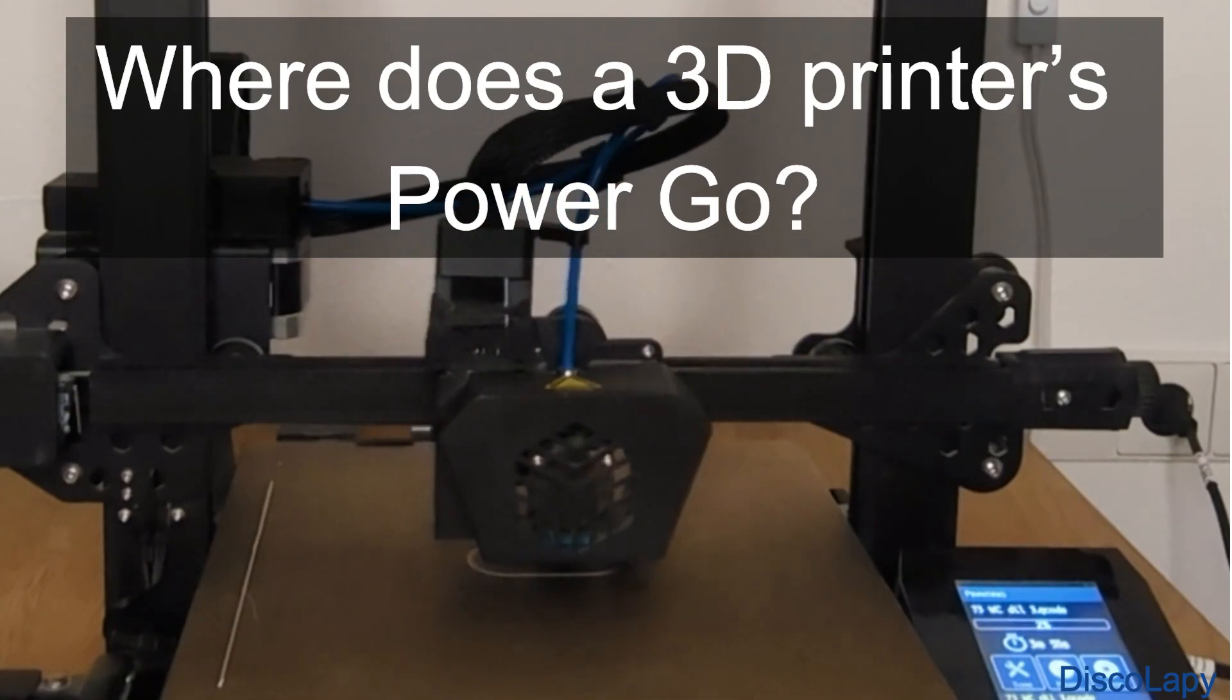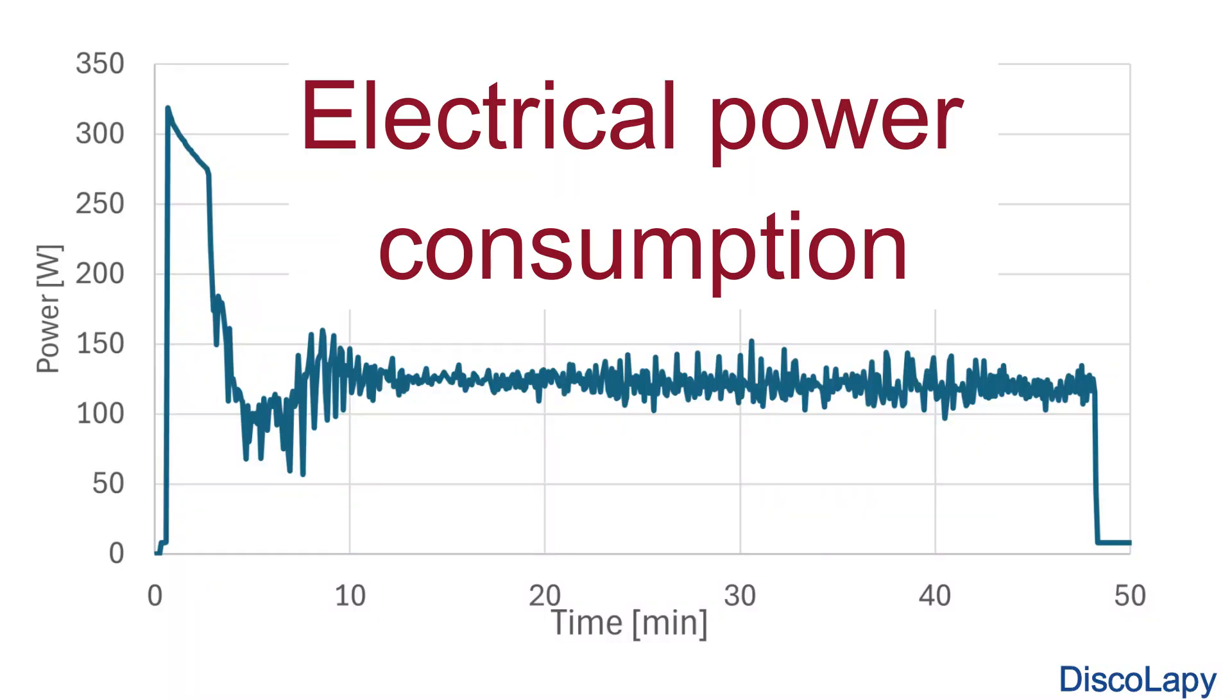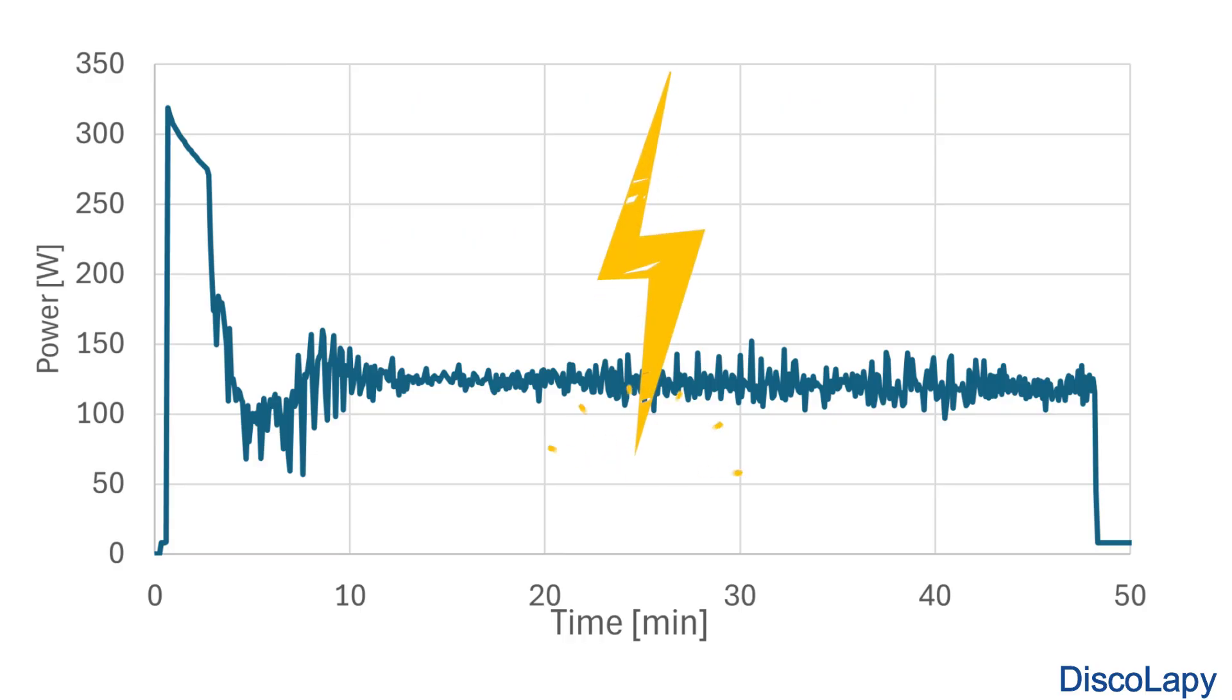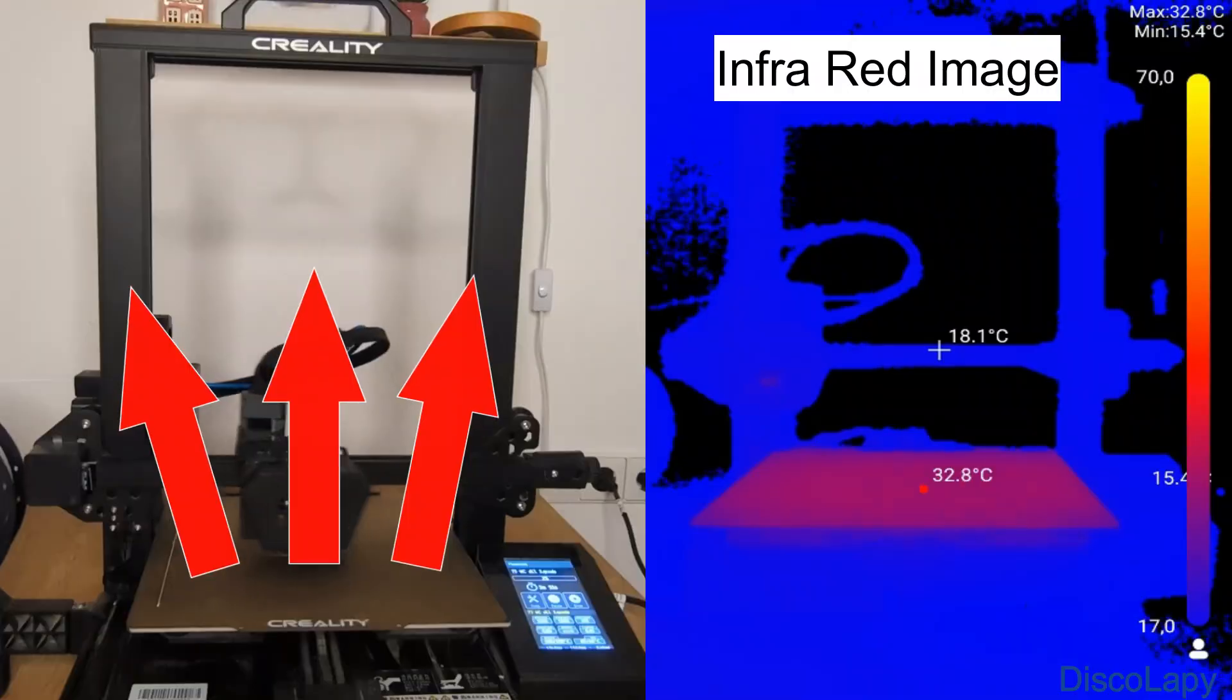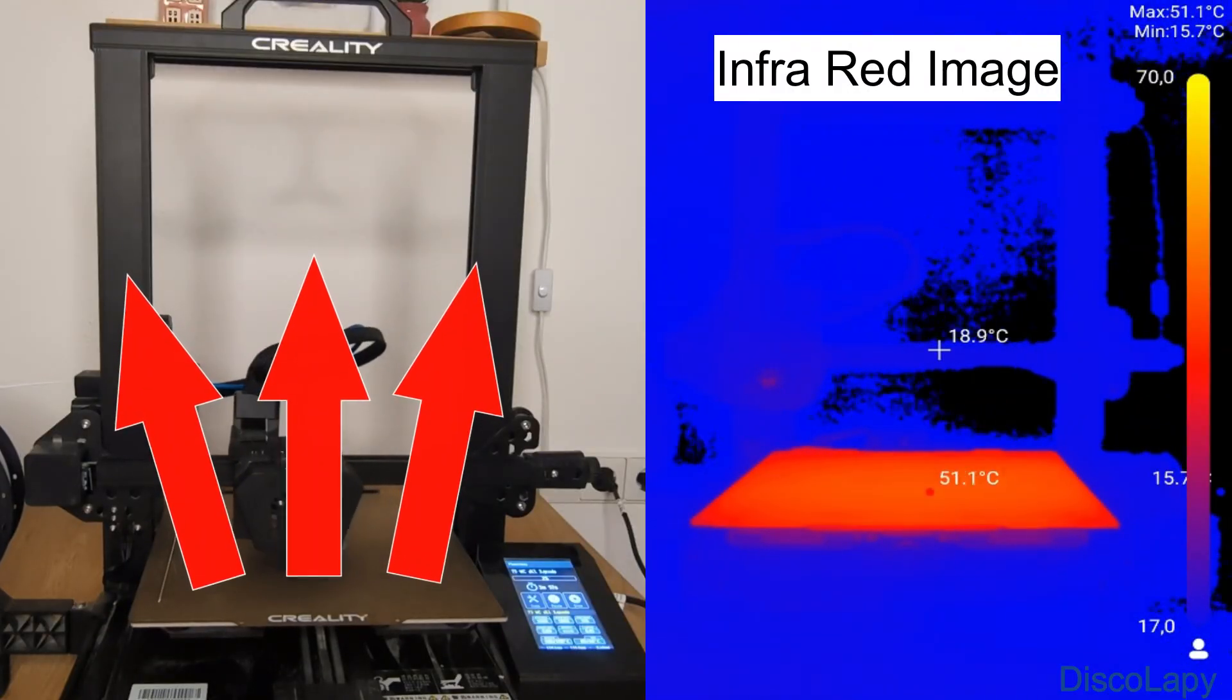This is a 3D printer in action and this is how its power changes over time. What is all that energy really used for? Most of it is just turning into heat.